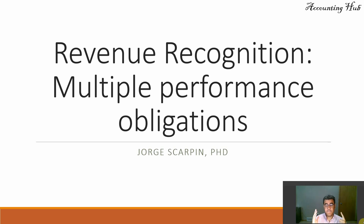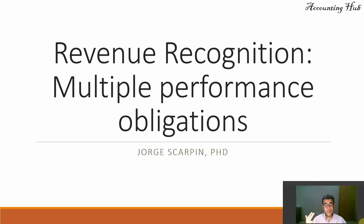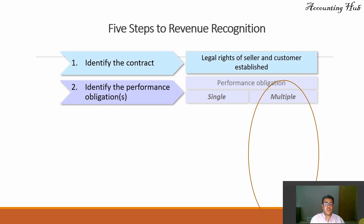This is a series of six videos about revenue recognition. The first one is an overview. The second one is single performance obligation. The third one is this one. And then we have three additional videos about long-term contracts: affordable, partial loss, and entire loss. All of the videos are in our video descriptions. For the long-term contracts, we will be working with an Excel file, and the Excel file is free to download, so it will be in the video description of these videos.